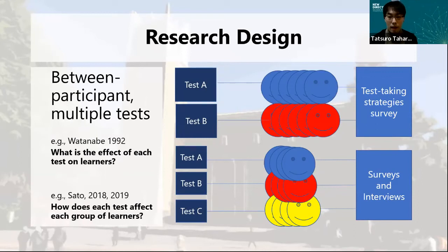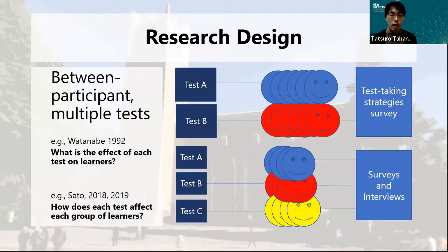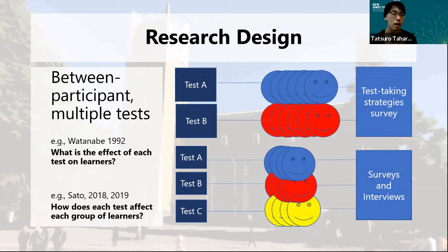Furthermore, many between-participant designs have also been used. In this design, researchers contrasted the behaviors and attitudes of learners who differ according to the tests they took to enter universities. For example, Watanabe compared the strategies used depending on whether a participant had taken the recommendation-based or general route exam. However, Watanabe also cautioned that the differences in strategies used might be due to factors other than tests, such as motivation, language proficiency, and learning experiences. This indicates a common drawback of between-participant design.